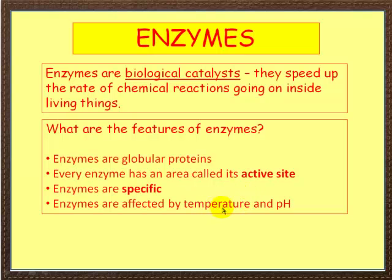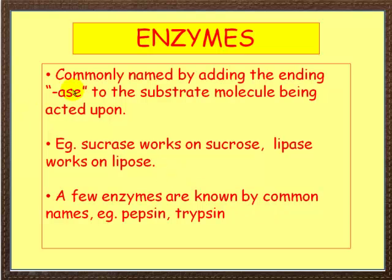Enzymes are affected by temperature and pH. Now, naming them: enzymes are named by adding -ase to the substrate molecule being acted upon. For example, sucrase is the enzyme that works on the substrate sucrose — OSE for the substrate, ASE for the enzyme. Similarly, lipase the enzyme works on lipids the substrate.